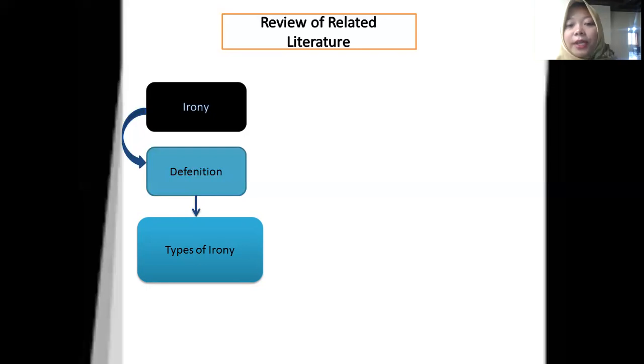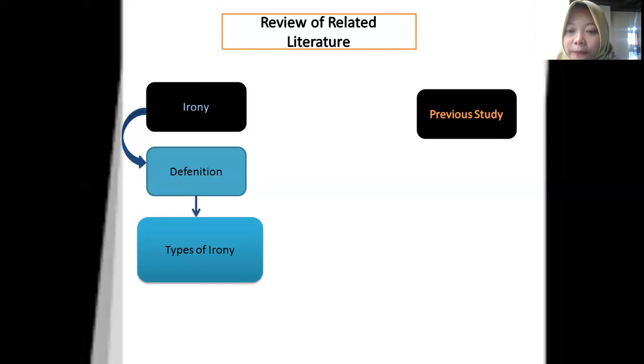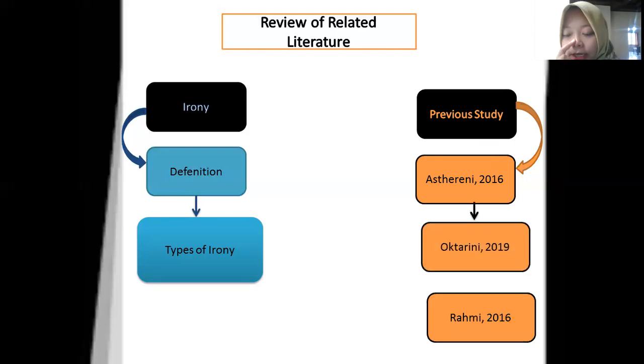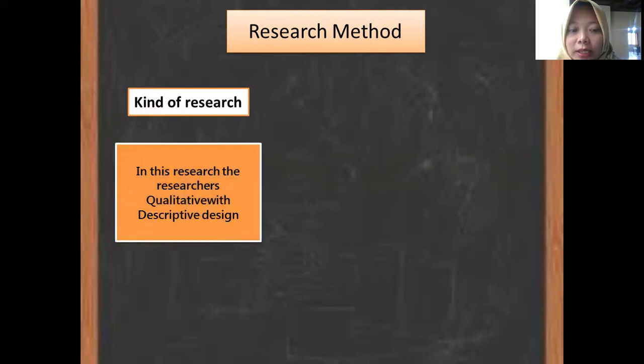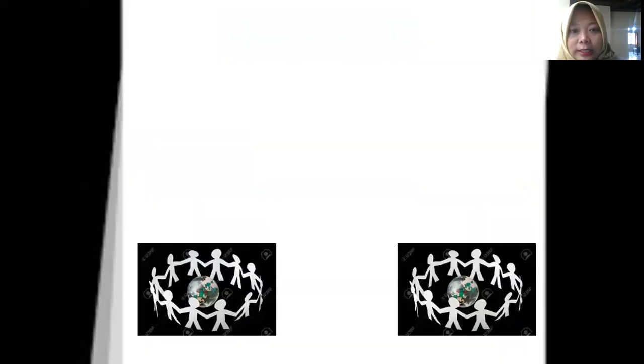There are many previous studies that have been done by some researchers like Astorini (2016), Aktarini (2019), and Rahmi (2016). Their studies talk about the analysis of irony in movies, novels, and poetry, but they don't analyze the kind of irony conducted by authors when writing short stories. The method of this research is qualitative research with descriptive design. The instrument used by the researcher is content analysis, and the sample is the Snow White story from Jacob Grimm.